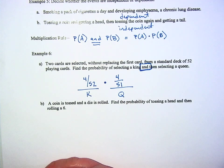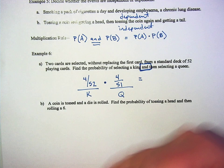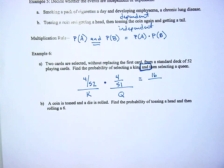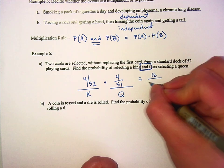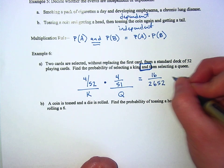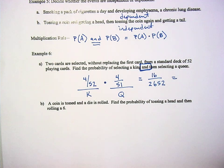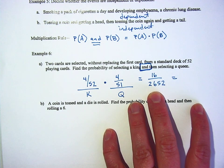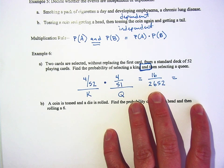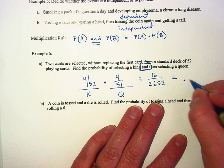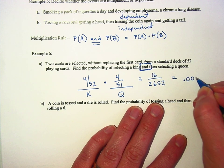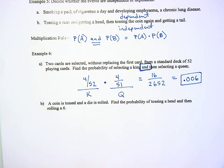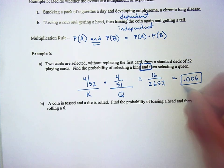Do you guys know how to multiply fractions together? The tops get multiplied and the bottoms get multiplied, so the top would be 16. I have no idea what 52 times 51 is — only 2,652. And then if we divide those two — I would strongly suggest you not leave a fraction like this, because you can see that the top and the bottom are both divisible by two. Let's just put it down: 16 divided by 2,652 is 0.006. So the chances of you pulling a king and then pulling a queen in that order is 0.006, or 0.6%.